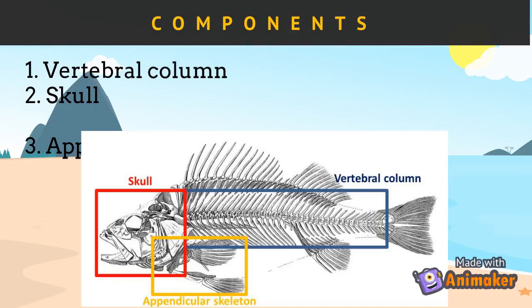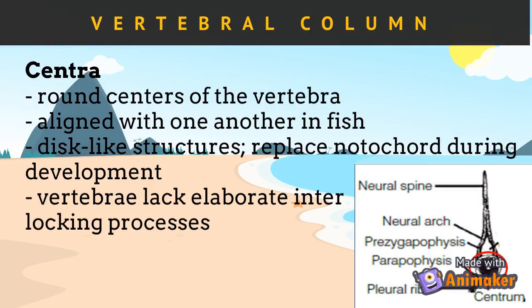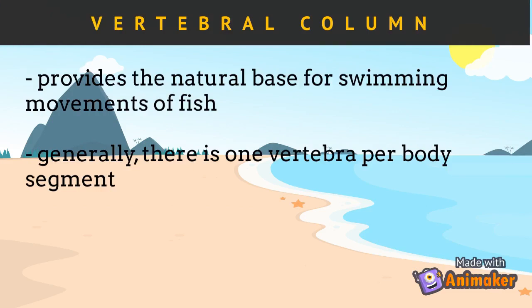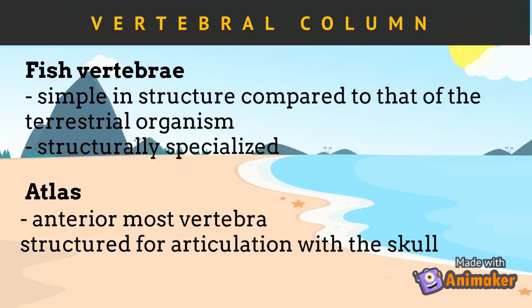The fish skeletal system is composed of the following components: the vertebral column, the skull, and the appendicular system. The vertebral column is composed of centra — centrum is singular. Centra are round centers of the vertebra, aligned with one another. In fish, these disc-like structures replace the notochord during development. The vertebrae lack elaborate interlocking processes, which are necessary in terrestrial vertebrates to counteract gravitational forces. The vertebral column provides the natural base for swimming movements of fish, and generally there is one vertebra per body segment.